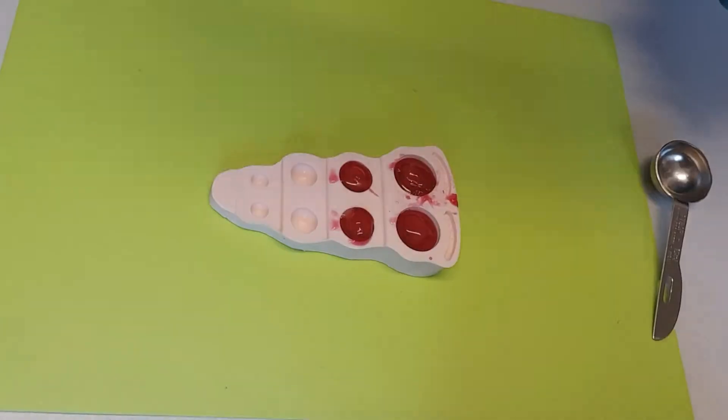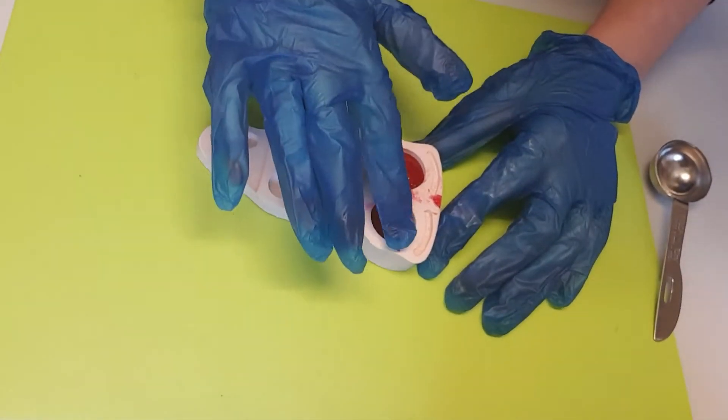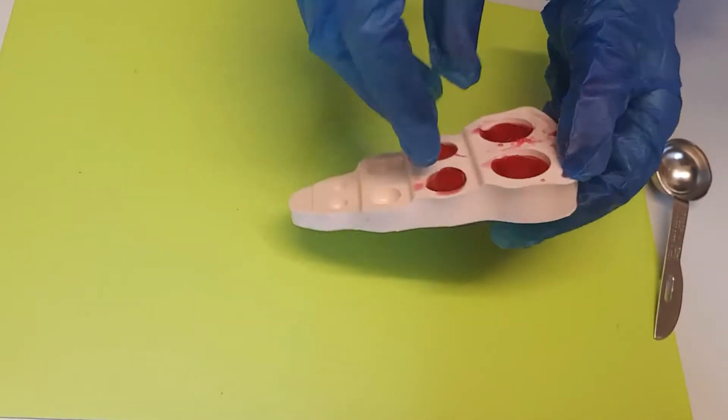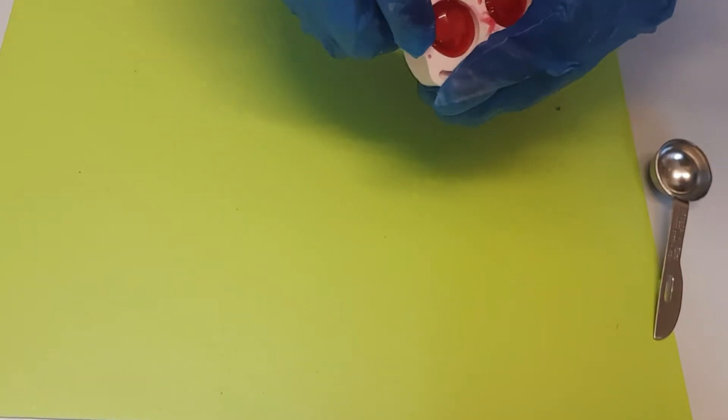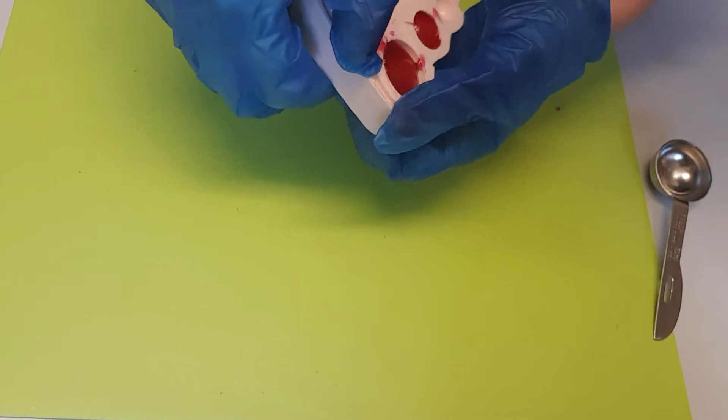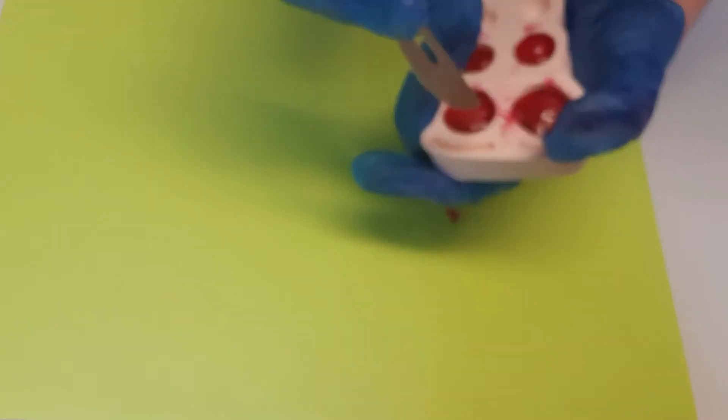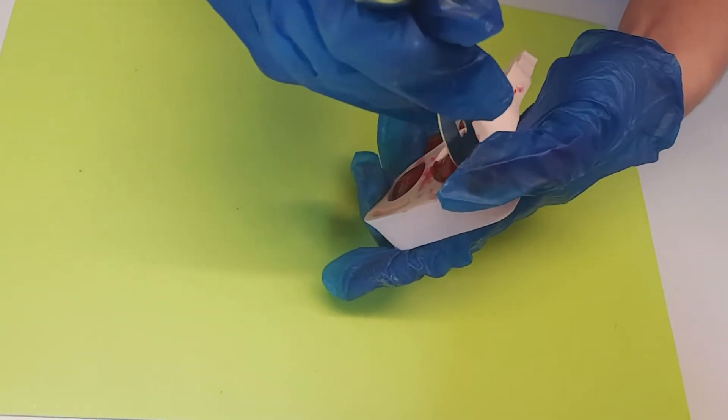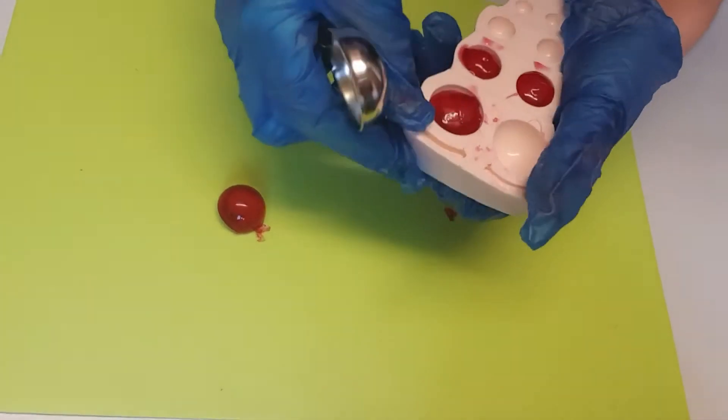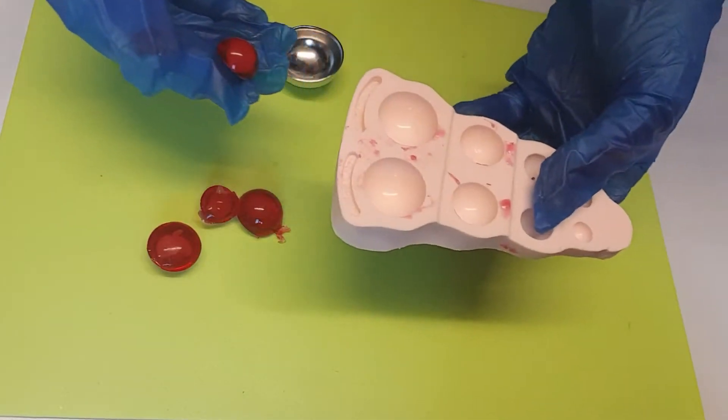These have been in the fridge now for a good 10 minutes and they're already quite solid, which is what you want. We're just going to pop them out. You want to gently pull the edges of the mold away from the sweet, careful not to pop it before you even got it out, and just use the edge of a knife or spoon or something just to help pop it out. That's why we use a flexible mold, so they're easy to pop out.